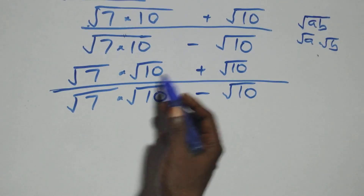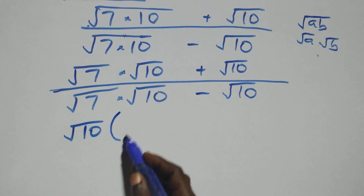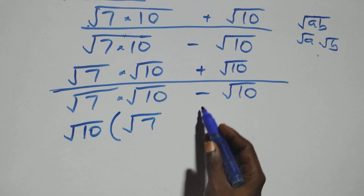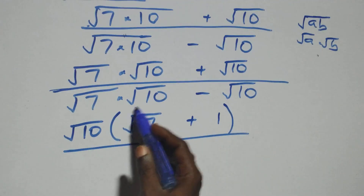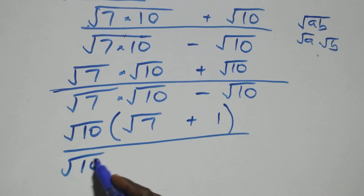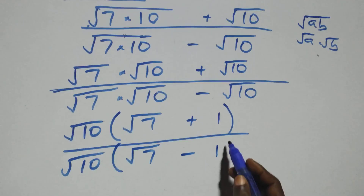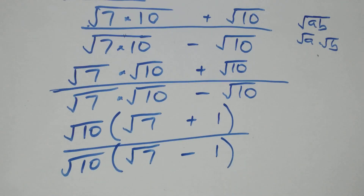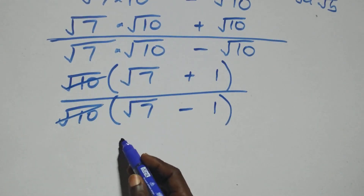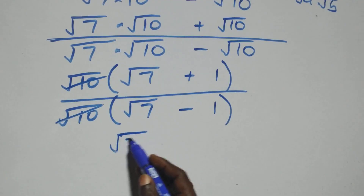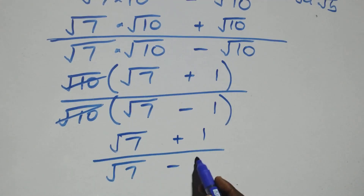Here we have √10 coming up, we will factor it out. This becomes √10 into bracket — we have √7 plus 1 left here — then divided by √10 into bracket, we have √7 minus 1 here. So √10 cancels each other, and we have (√7 + 1) over (√7 − 1).